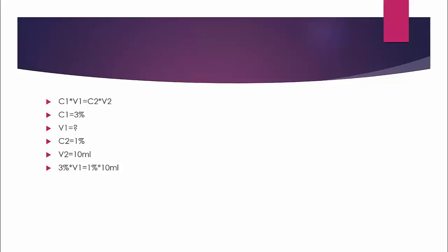What we can do is plug those variables into the equation. 3% times V1 equals 1% times 10, and we can drop the units off of the numbers. 3 times V1 equals 1 times 10.